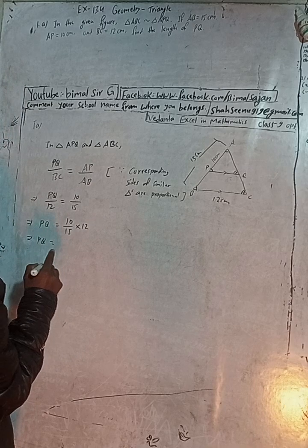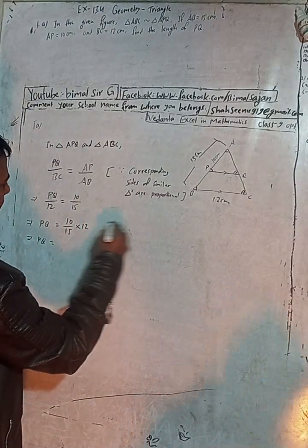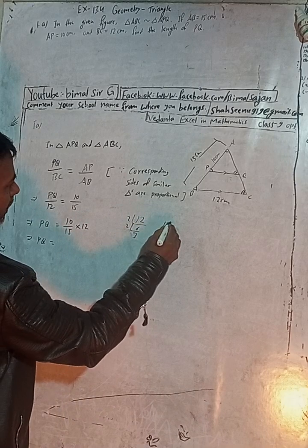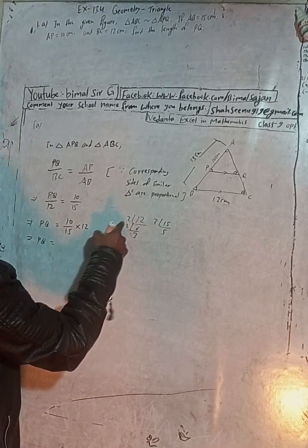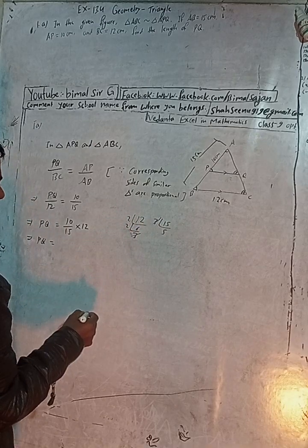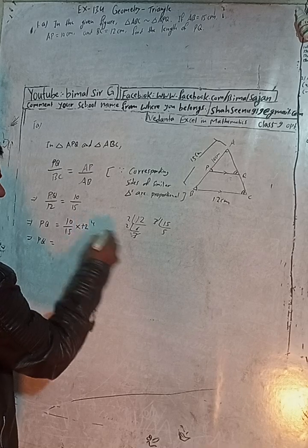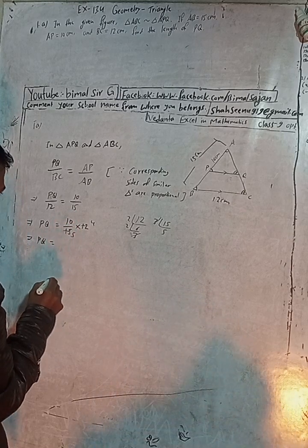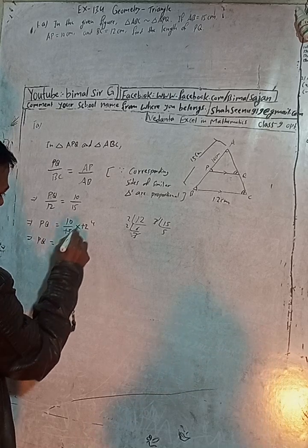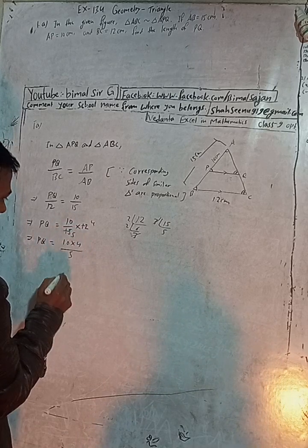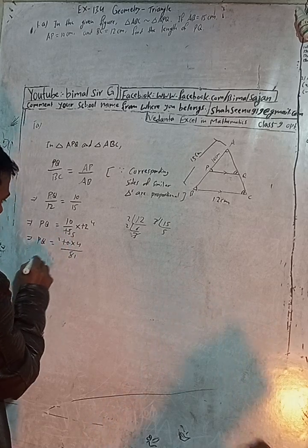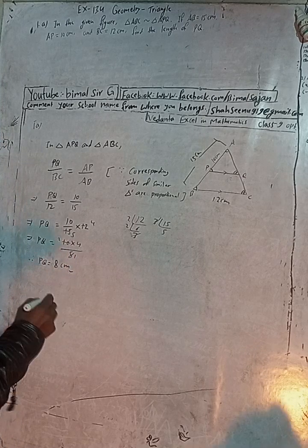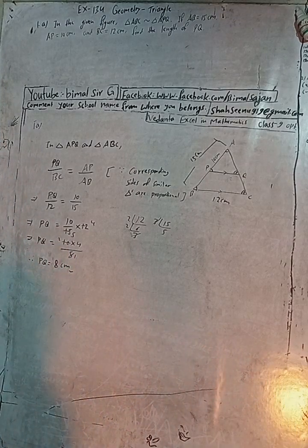Cancel the common factors: 10 and 5 cancel to give 2, and 4 remains. So PQ equals 4 divided by... simplifying further, 5 ones are 5, and 10 over 5 gives 2. Therefore PQ is equal to 8 cm. This is our answer.